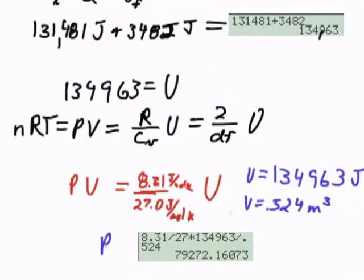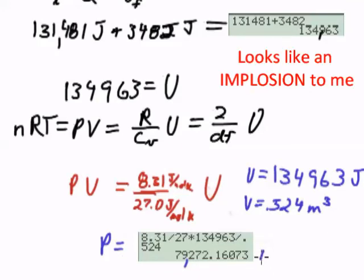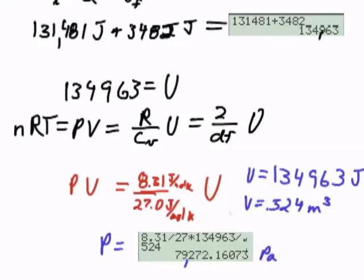And then I'll find our pressure is going to be 79,272 Pascals. That's interesting if I did this right. I mean, the pressure went down quite a lot after the hydrogen and oxygen turned into steam.